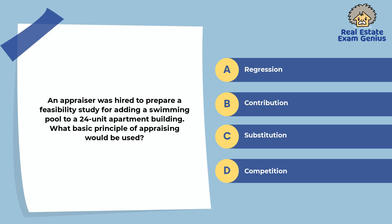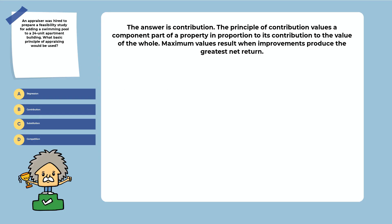An appraiser was hired to prepare a feasibility study for adding a swimming pool to a 24-unit apartment building. What basic principle of appraising would be used? Regression, contribution, substitution, or competition. The answer is contribution. The principle of contribution values a component part of a property in proportion to its contribution to the value of the whole. Maximum values result when improvements produce the greatest net return.